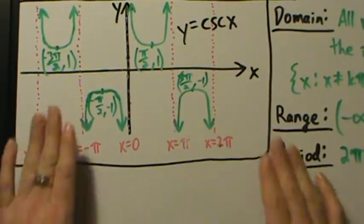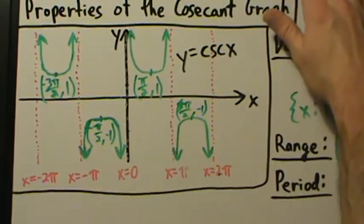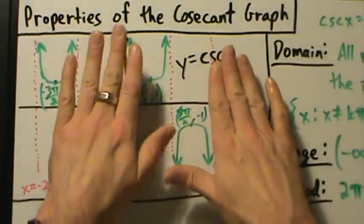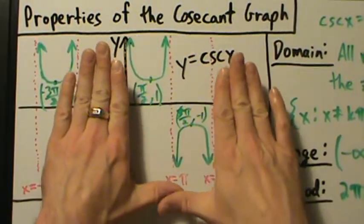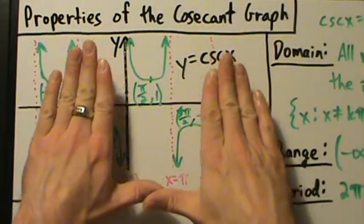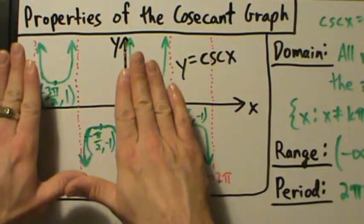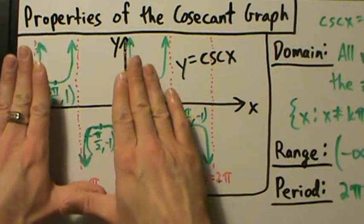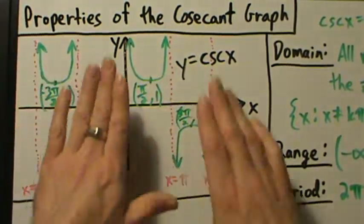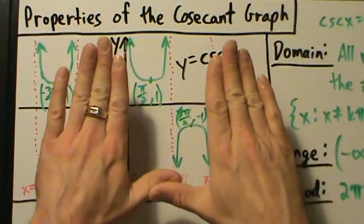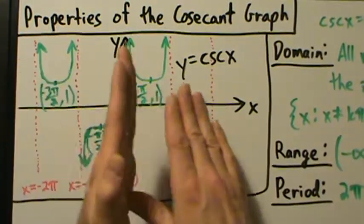We can see that on the graph: from 0 to 2π is one complete cycle — this piece with this piece and the three asymptotes x equals 0, x equals π, x equals 2π. If we go 2π units to the left, we have another complete cycle — the same exact shape, piece up here, piece down here. And if we move 2π units to the right, we get the same shape again, and then again, and so on.